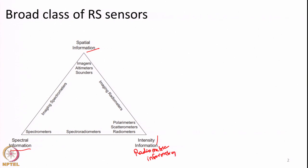Spatial information is data about any given ground point x, y. For example, if I collect the elevation of all ground points — x1, y1, z1; x2, y2, z2 — if I collect such data at a given ground coordinate x, y to find what is the elevation of the point, I am actually collecting spatial information.